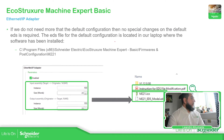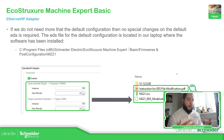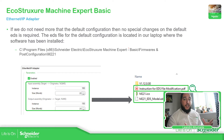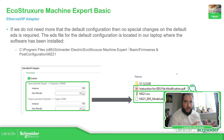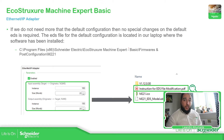In order to easily share the information that we have configured in Machine Expert Basic, the software has a predefined EDS file — an electronic data sheet — that allows us to easily import the variables in the other software. In my case, it's going to be the EcoStruxure Machine Expert along with the M262 controller.